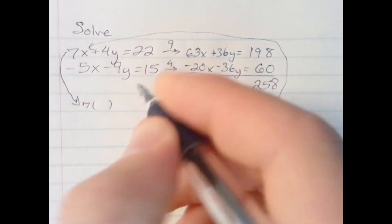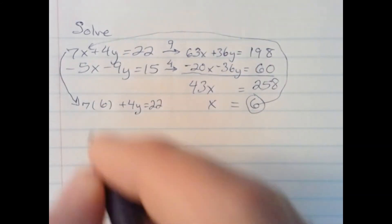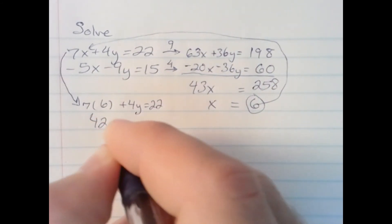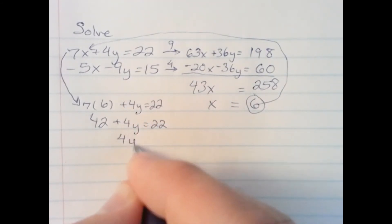7 times the x plus 4y equals 22. 7 times 6 is 42. Subtract 42 from both sides, and I get 4y equals negative 20.